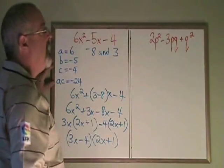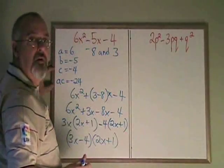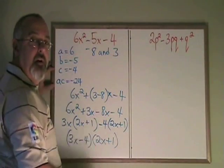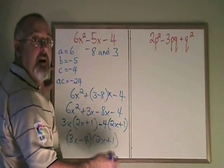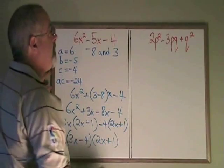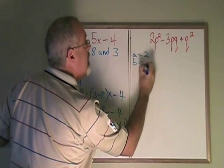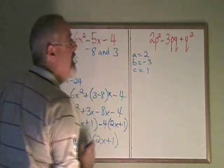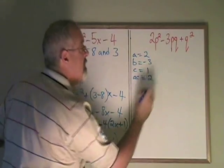Here's another example where the only complication is we have that extra letter. We have the q and the q squared involved. Like with the simple trinomial, we can ignore that q until the end. And then we will still get the right answer. Our a is 2. Our b is negative 3. Our c is 1. And our ac is 2 times 1, which is 2.